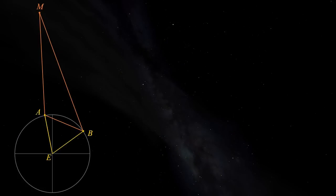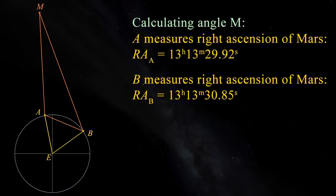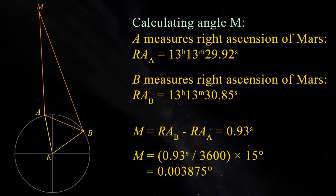At the time of observation, Alice captures an image of Mars, and measures its right ascension to be 13 hours, 13 minutes and 29.92 seconds. Bob captures his image of Mars at the same time. He measures its right ascension to be 13 hours, 13 minutes and 30.85 seconds. To calculate angle M, we need the difference between Alice and Bob's right ascension values. This comes out as 0.93 seconds. This gives us an angle M of 0.003875 degrees.